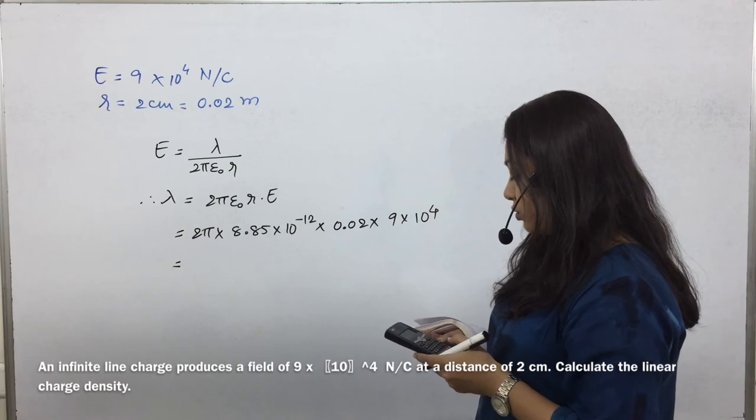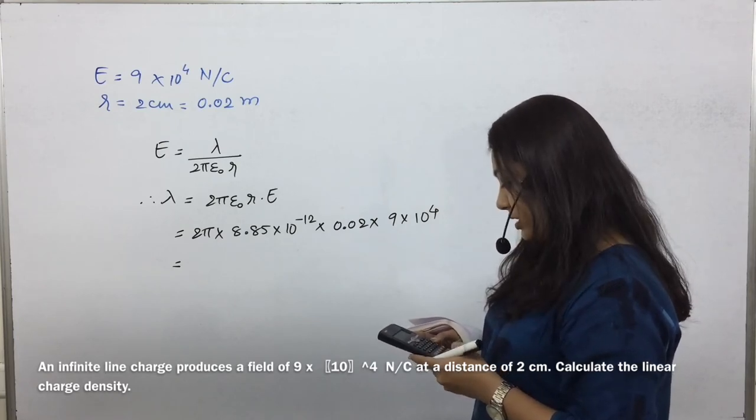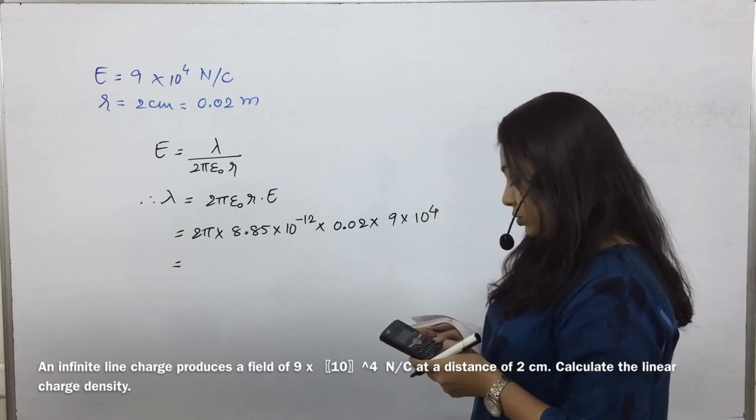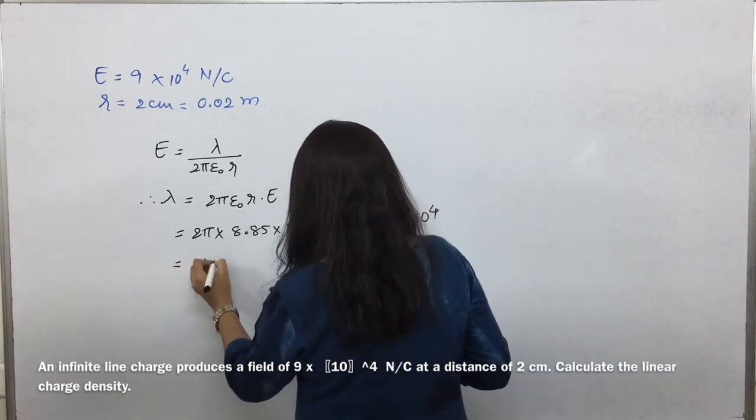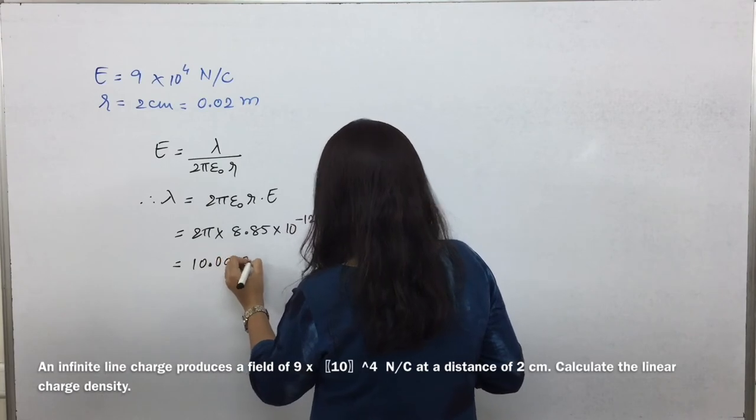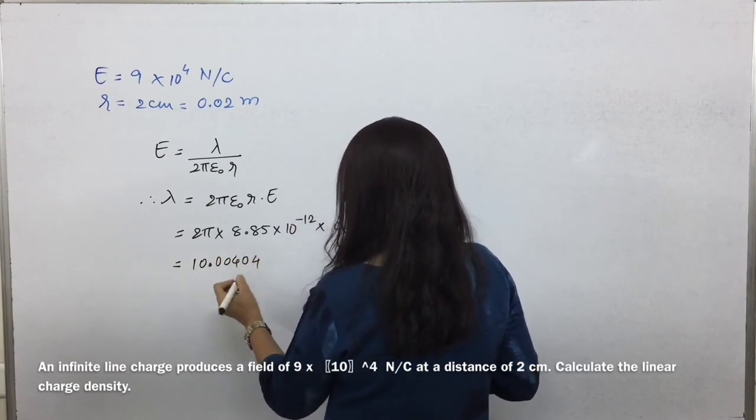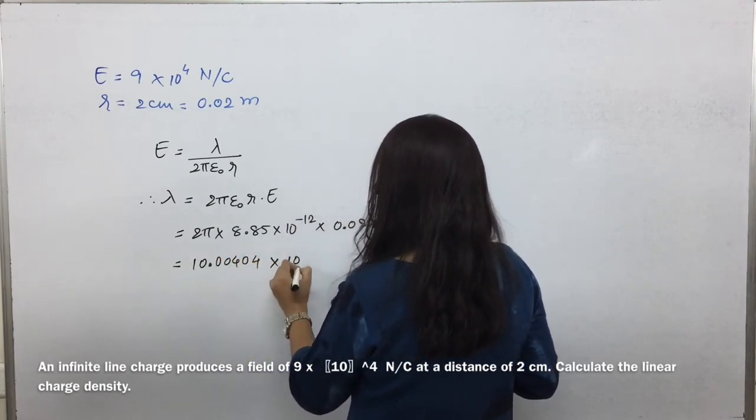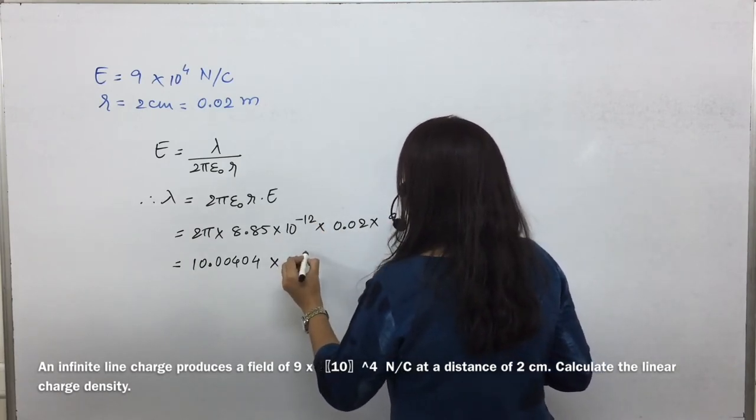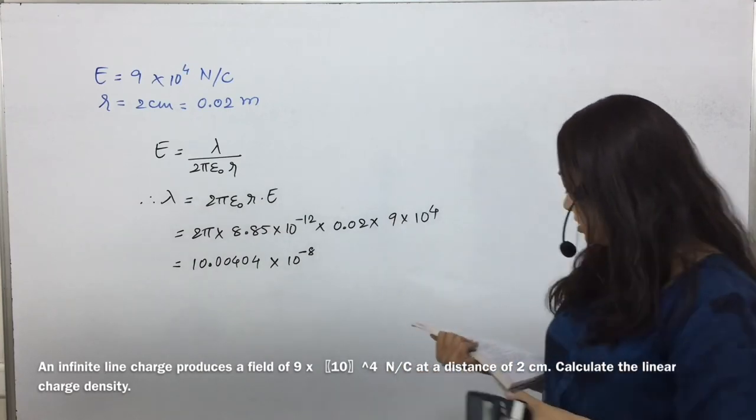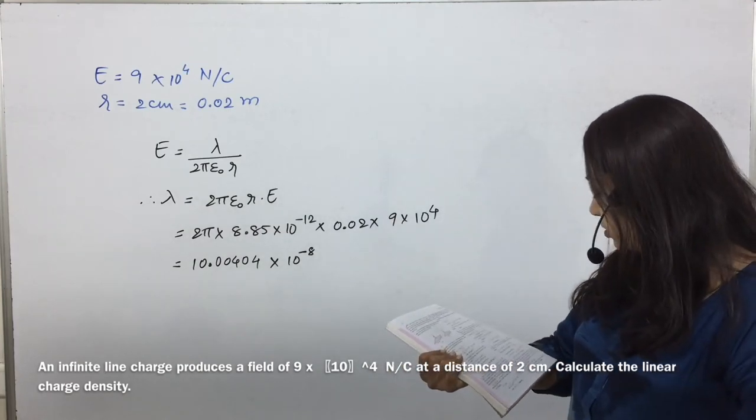Okay, 2 into π into 8.85 into 0.02 into 9, that brings down to 10.00404 into 10 to the power minus 12 plus 4 minus 8. Is this anywhere close?